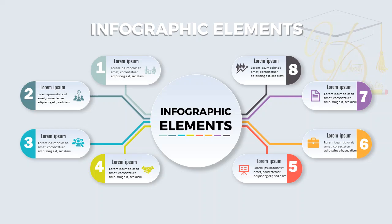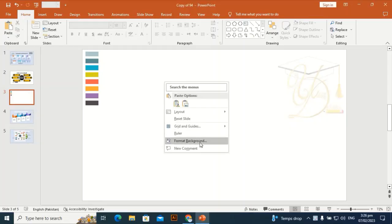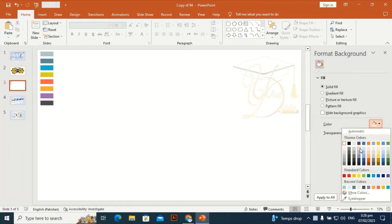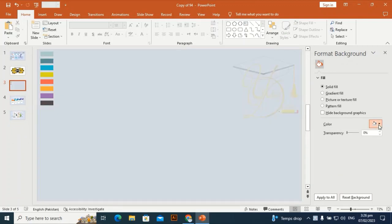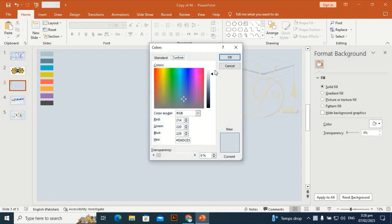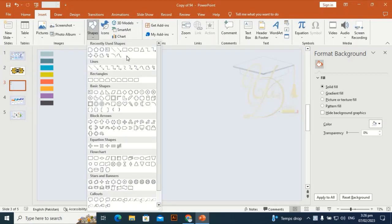I'm going to format the background and give it a different color — make it a little bit light. Go to More Colors and make it a little bit lighter.